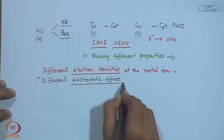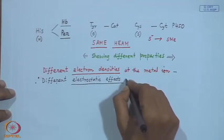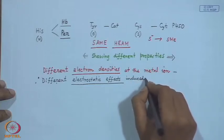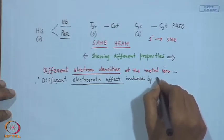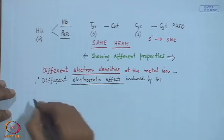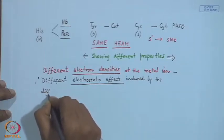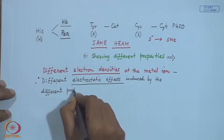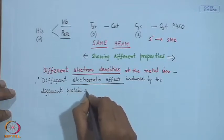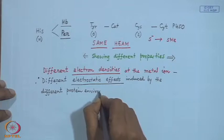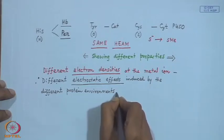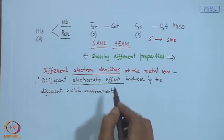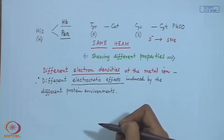How do these different electrostatic effects come into the picture? They are induced by the different protein environments. The importance lies in the fact that the protein environment is simply controlling the electrostatic effect on the iron site, which we cannot get for the small molecule analog.